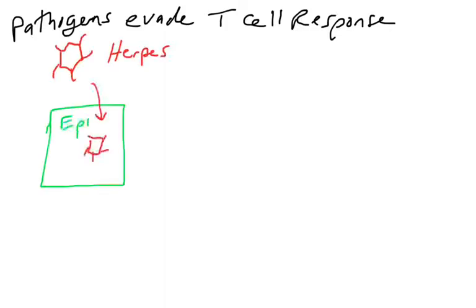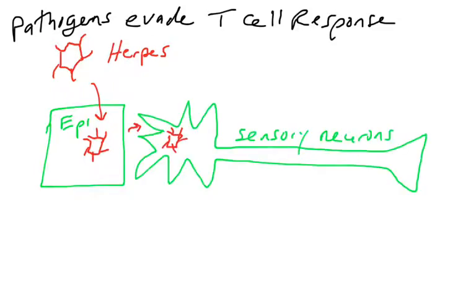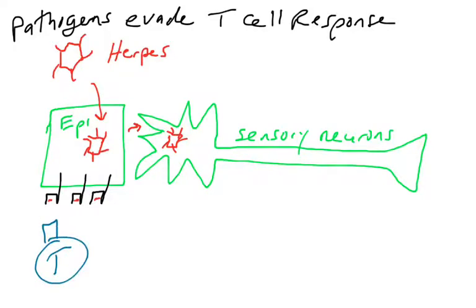We'll start with herpes viruses. Herpes viruses are excellent at infecting people and staying around for their entire lives, so the immune system has a really hard time removing all herpes viruses from the body. That is due to the cell types that herpes viruses infect. Herpes viruses can infect epithelial cells, and they can also infect neurons — including sensory neurons in viruses like those that cause cold sores or genital herpes. Those neurons are privileged sites in terms of the immune system being able to access them and remove pathogens from them.